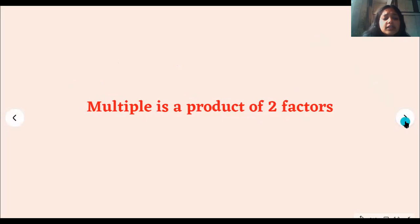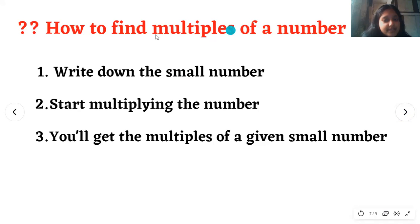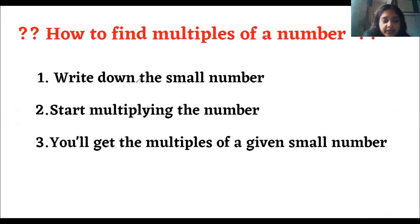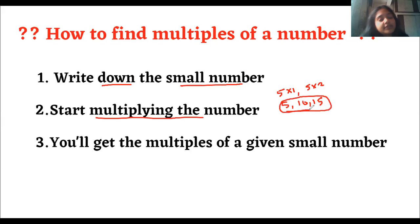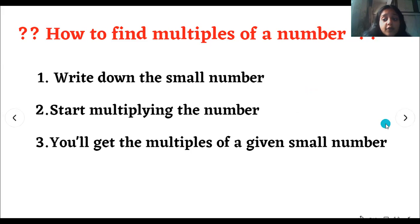Now we are going to see how we are going to find multiples. Multiples of a number are very easy to find. We all know about multiplication tables — it's very similar to that. We have to write down the small number first, then start multiplying the number by one, then by two, like we did for five — five, ten, fifteen. Like that, we will continue to multiply the number, and these are all called multiples. You will get the multiples of a given small number. One small number becomes very big, and it goes till endless.